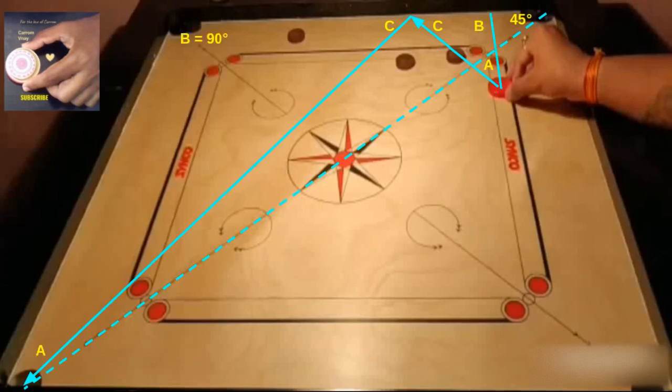Once you understand the impact angle on the side frame, you will also understand that the launching angle made by the striker and the pocketing angle of the coin are congruent or equal here represented by the letter A. As the third angle represented by the letter B is a right angle or equal to 90 degrees.